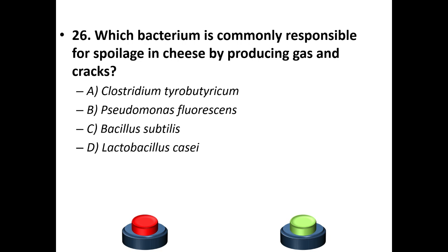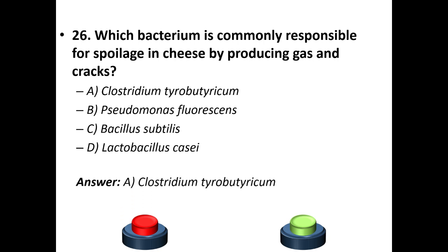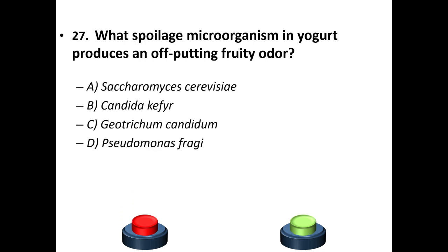Twenty-sixth question: which bacterium is commonly responsible for spoilage in cheese by producing gas and cracks? A: Clostridium tyrobutyricum. B: Pseudomonas fluorescens. C: Bacillus subtilis. D: Lactobacillus casei. Answer is A — Clostridium tyrobutyricum. Twenty-seventh question: what spoilage microorganism in yogurt produces an off-putting fruity odor? A: Saccharomyces cerevisiae. B: Candida kefir. C: Geotrichum candidum. D: Pseudomonas fragi. Your answer is D — Pseudomonas fragi.